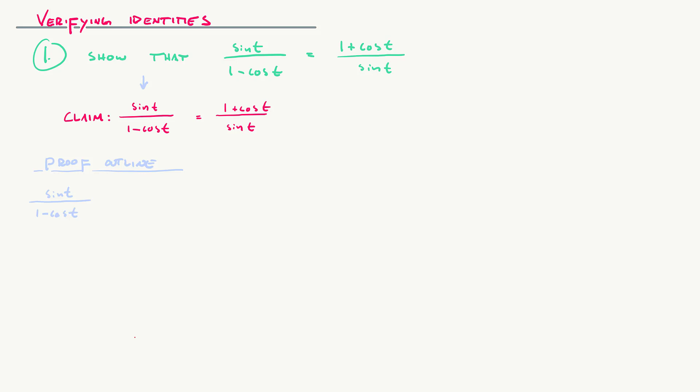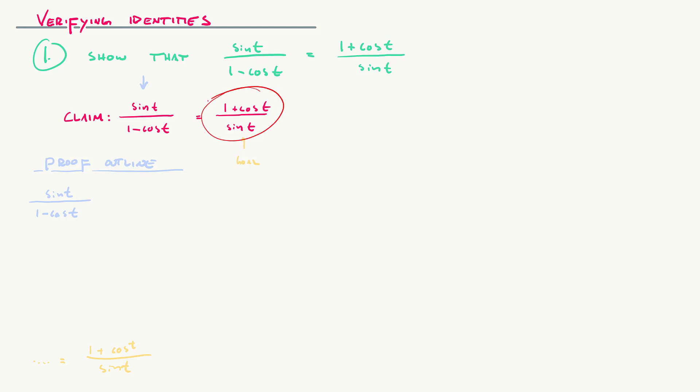So I'm going to start with the left-hand side: sin(t) / (1 − cos t). I need to think about how to get it to look like the target. I need a (1 + cos t) in the numerator — that happens to be the conjugate of (1 − cos t). Always keep your eyes on the prize: remember where you're trying to get to. That's why it seems reasonable to multiply the top and bottom by (1 + cos t).